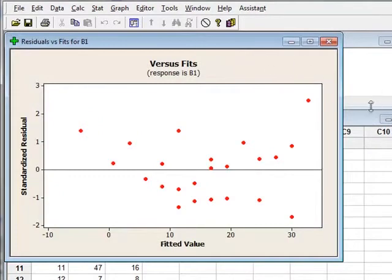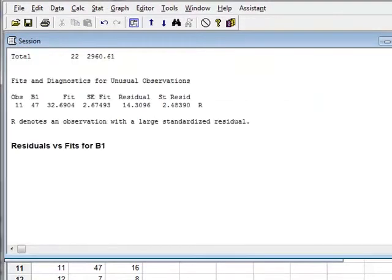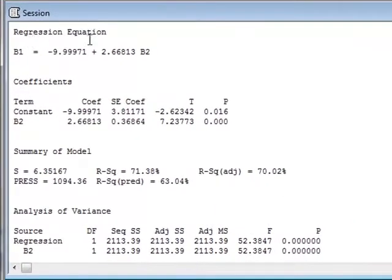The numerical results are given in the session window. We see that we have a linear regression equation given by B1 equals effectively minus 10 plus 2.668 times B2. This is a straight line relationship but it gives an intercept of minus 10 on the y-axis, which means that if there are zero occurrences of B2 this predicts mathematically that there would be minus 10 occurrences of B1, which is clearly not a realistic situation.